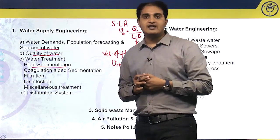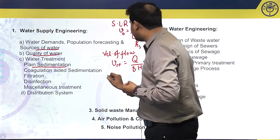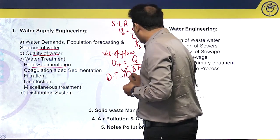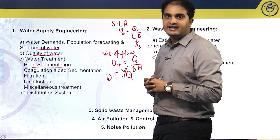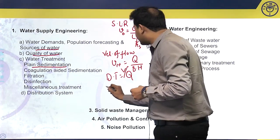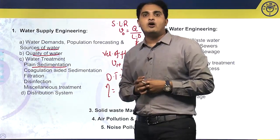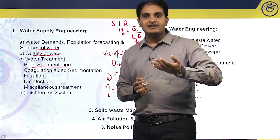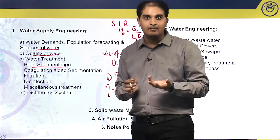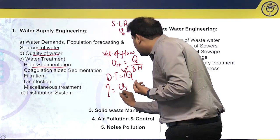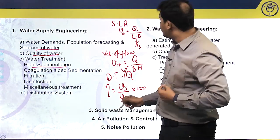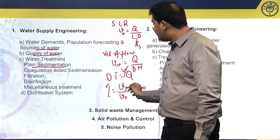The next design concept is detention time, DT, given by DT = Volume / Discharge. The next important design parameter is efficiency. Efficiency, meaning output by input, is given by η = (Vs / V₀) × 100, where V₀ is the surface loading rate and Vs is the settling velocity.